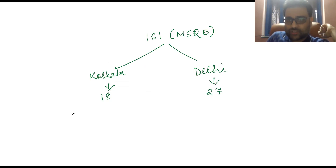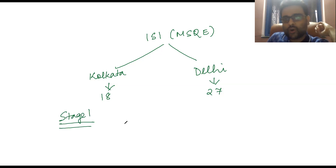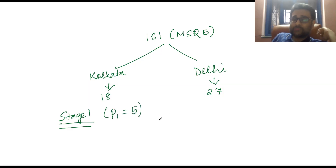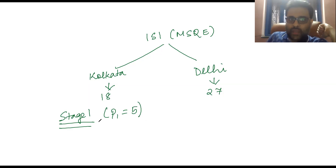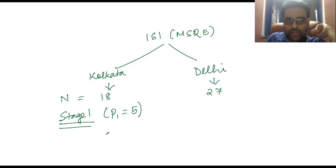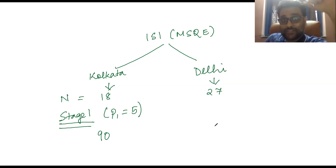There are two centers: the Kolkata Center and the Delhi Center. The Kolkata Center has 18 seats and the Delhi Center has 27 seats, making a total of 45 seats. There are two stages — stage 1 and stage 2. For stage 1, keep in mind the value of P1 is equal to 5. What this means is I will multiply the number of seats in each center by 5. So for Kolkata it will be 18×5 = 90, and for Delhi it will be 27×5 = 135.